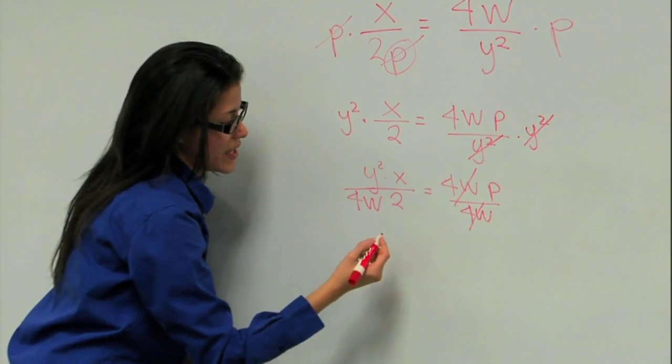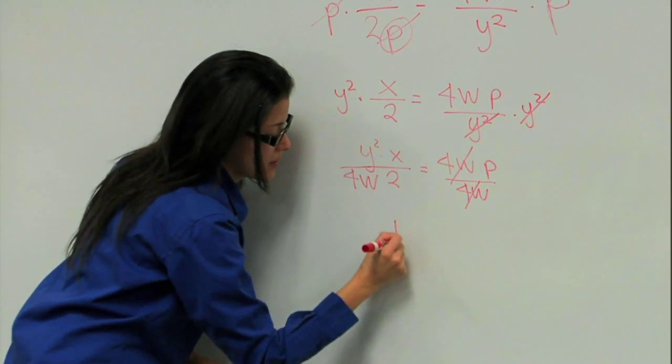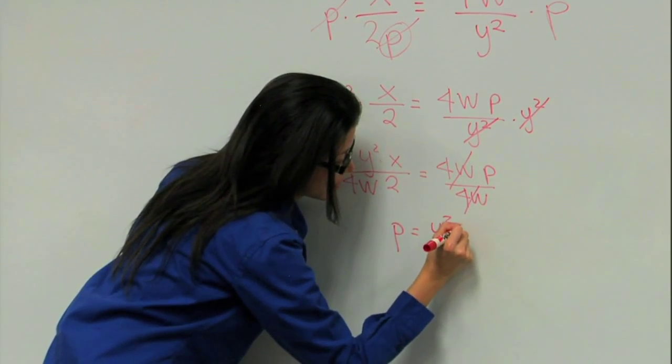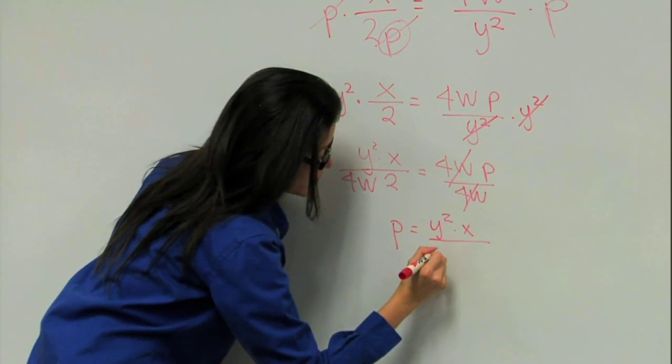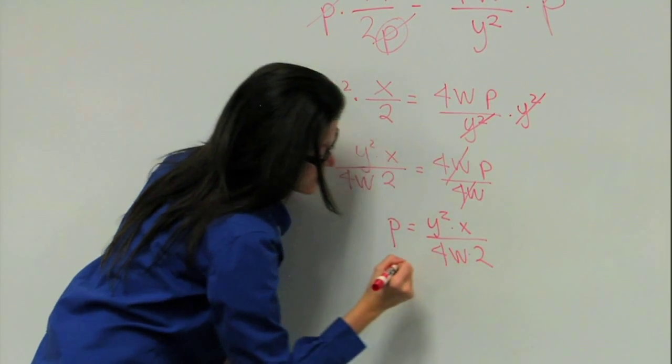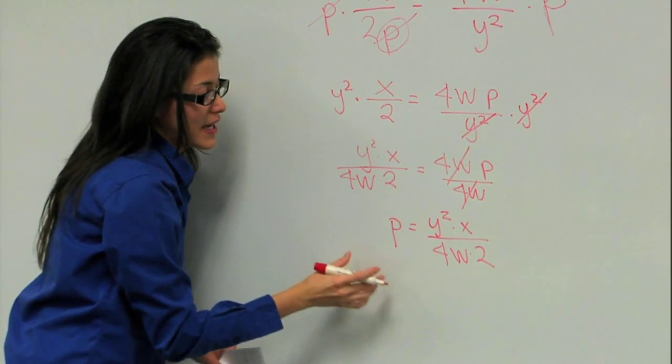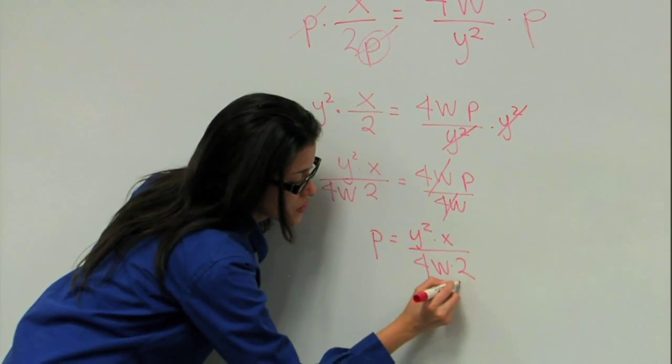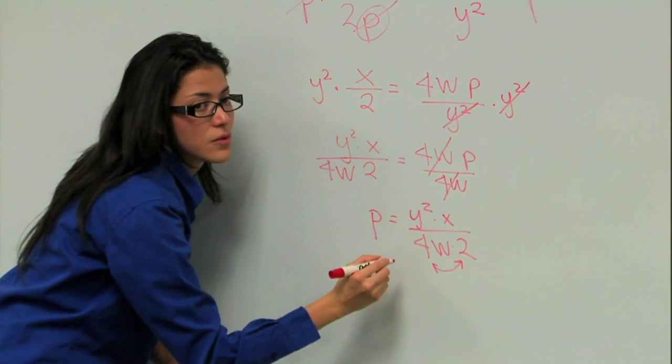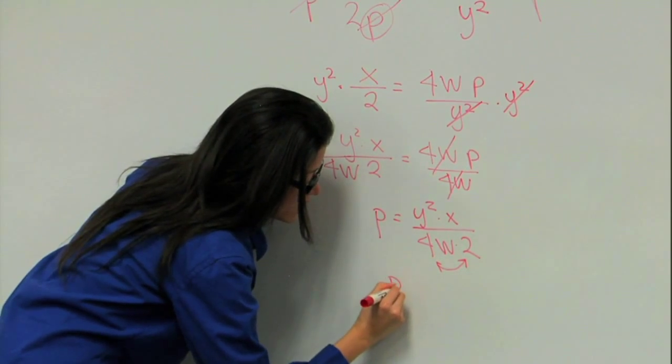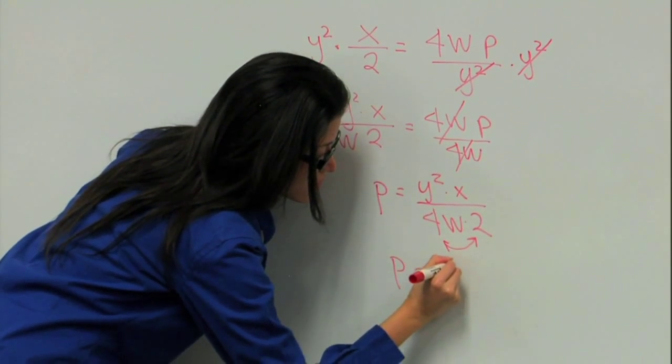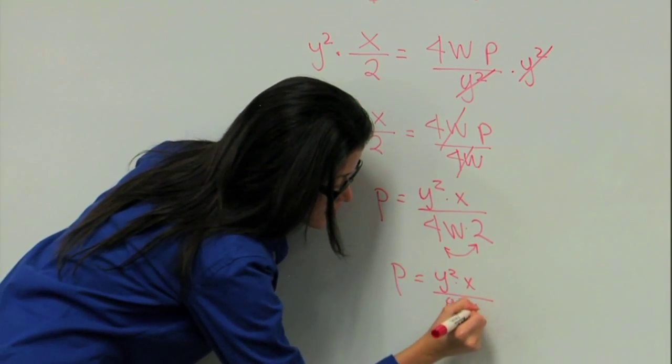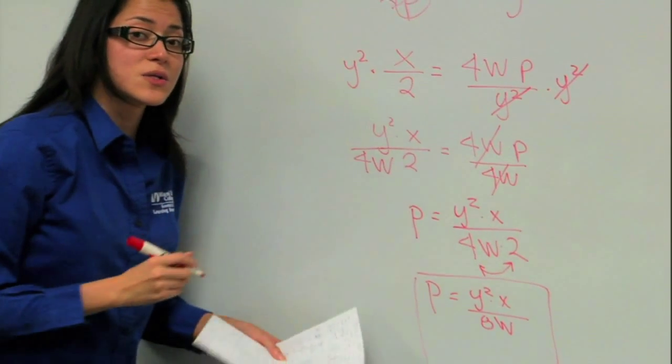Now, rewriting this, we have, I'm going to write P on this side now. And this on the other side. And we have P equals Y squared times X over 4W times 2. Now, this is your final answer, and that's how you solve for P.